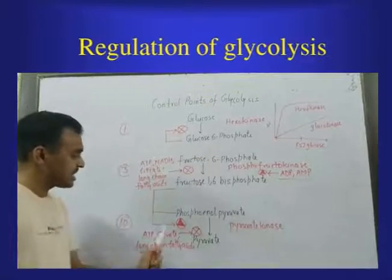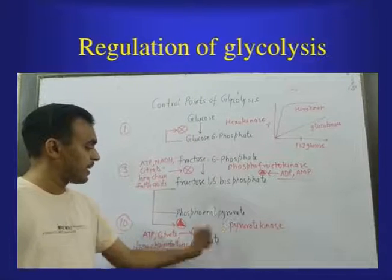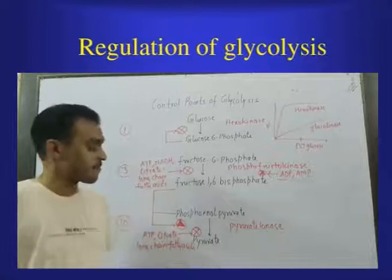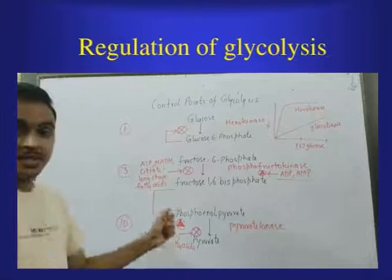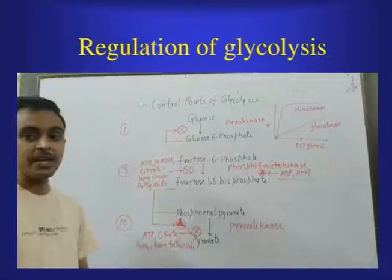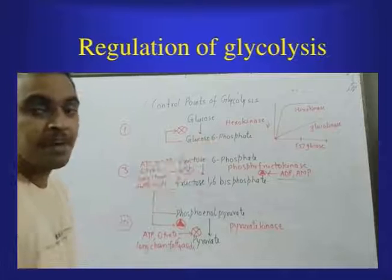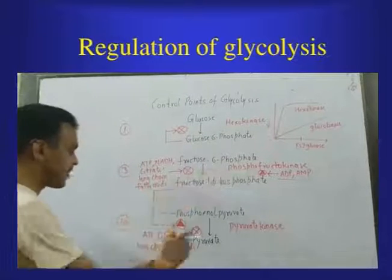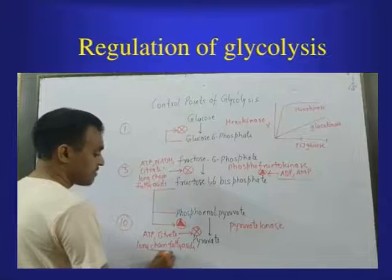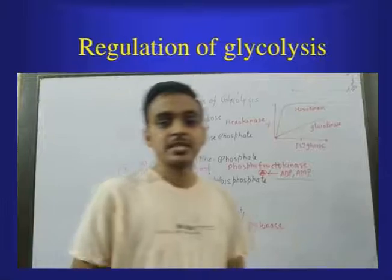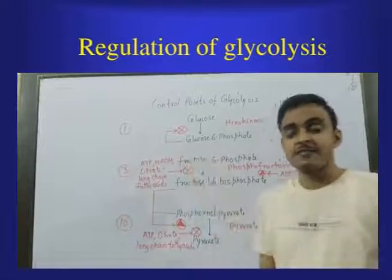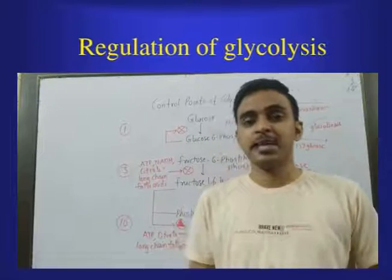In the last and final step, phosphoenolpyruvate is converted into pyruvate by the enzyme pyruvate kinase. This enzyme is activated by fructose 1,6-bisphosphate when the energy level is very low, but when the energy level is high, this enzyme is inhibited by ATP, citrate, and long-chain fatty acids. These were the regulating points of glycolysis, which is the first step of carbohydrate metabolism.